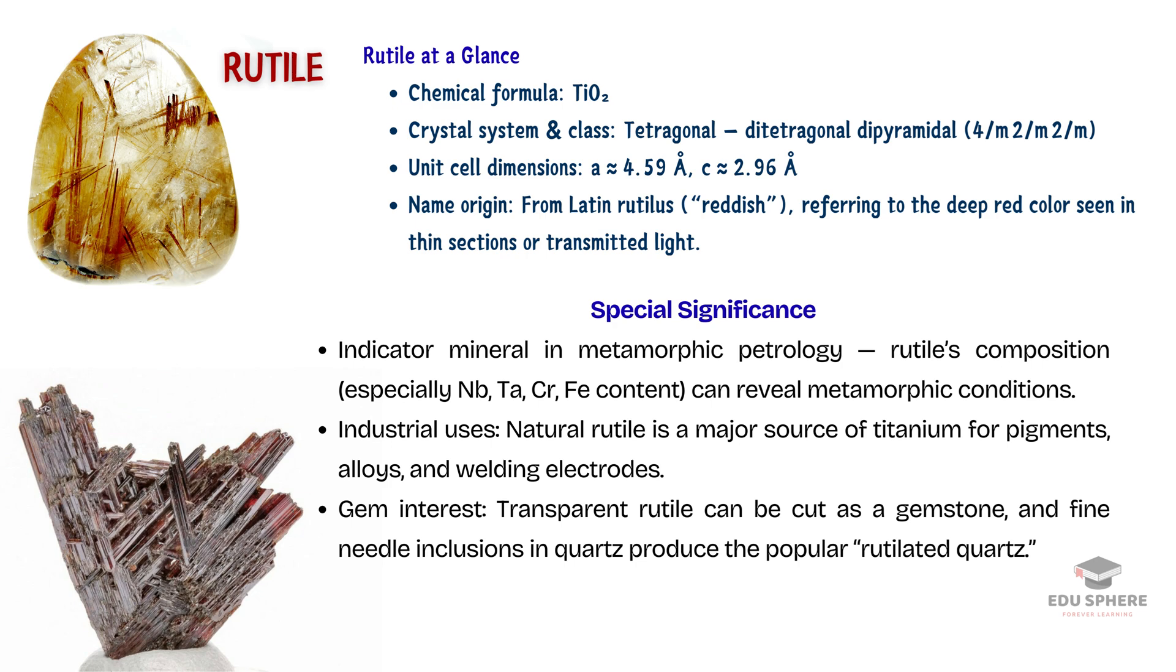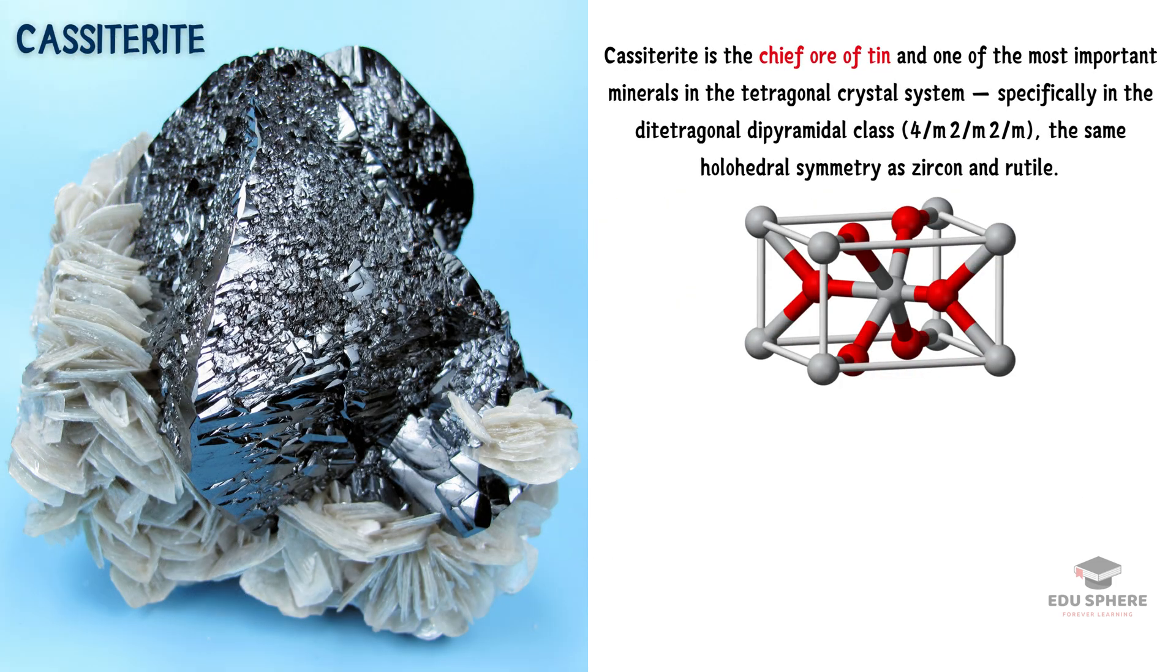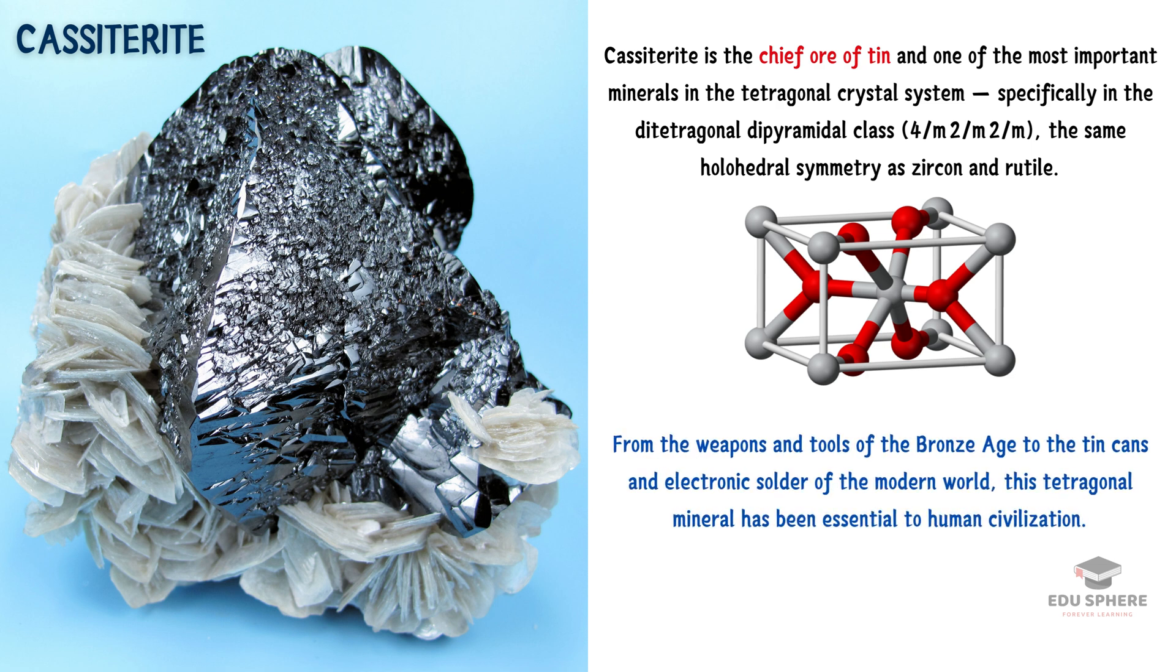And perhaps one of the most historically significant tetragonal minerals is cassiterite. For thousands of years, cassiterite has been the primary ore of tin. From the weapons and tools of the Bronze Age to the tin cans and electronic solder of the modern world, this tetragonal mineral has been essential to human civilization.